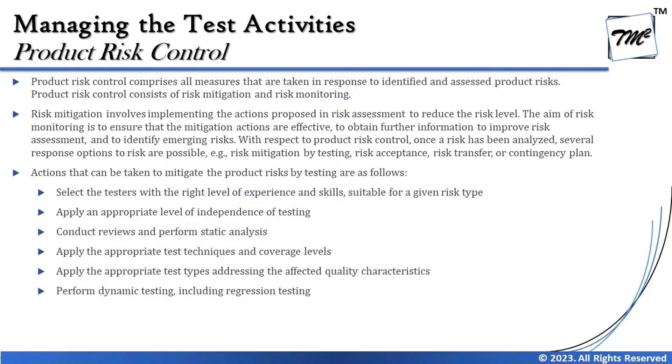The last step is product risk control. We cannot fully control or stop a risk from happening, but the idea is to keep an eye and consistently take corrective and guiding actions to ensure every risk stays in context and is not missed. Product risk control comprises all measures taken in response to identified and assessed product risk, and consists of risk mitigation and risk monitoring.